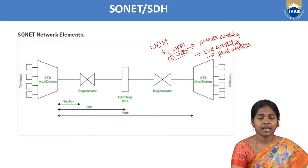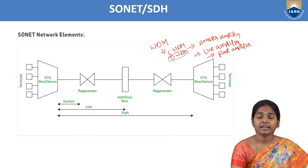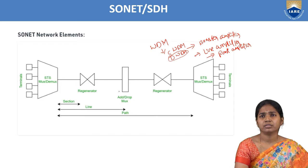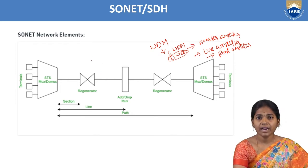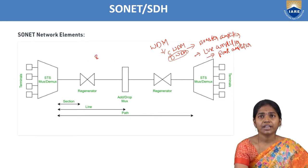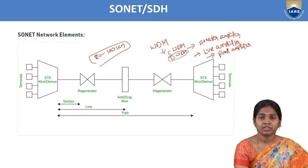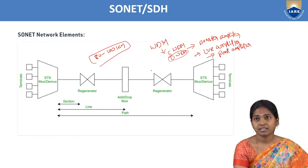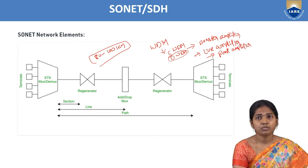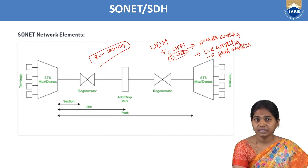The booster amplifier is connected at the end of the transmitter. The line amplifier is connected between the optical fibers. If we need to increase the data rate and transmit data over longer distances, we use the line amplifier — every 80 to 100 kilometers of optical fiber. With the line amplifier we increase signal strength, and at the receiver end we use the post amplifier.